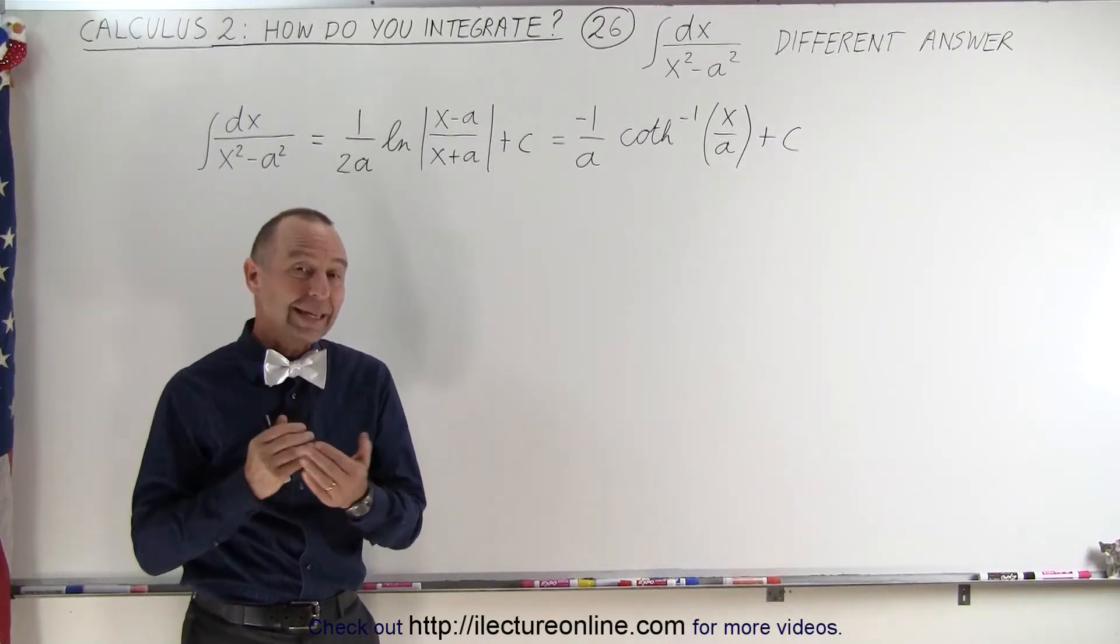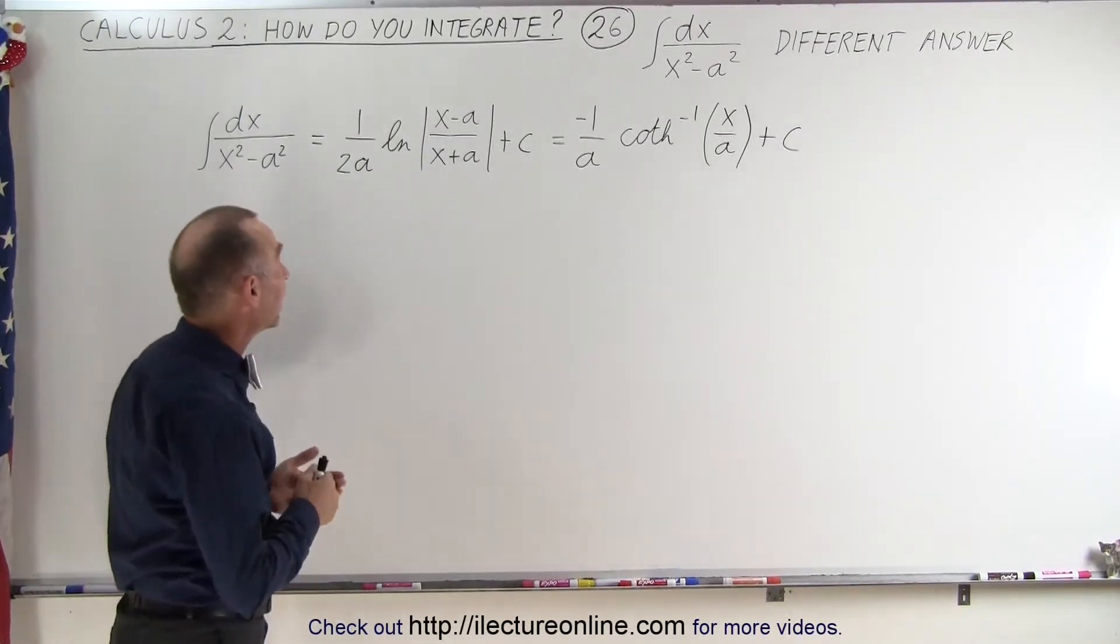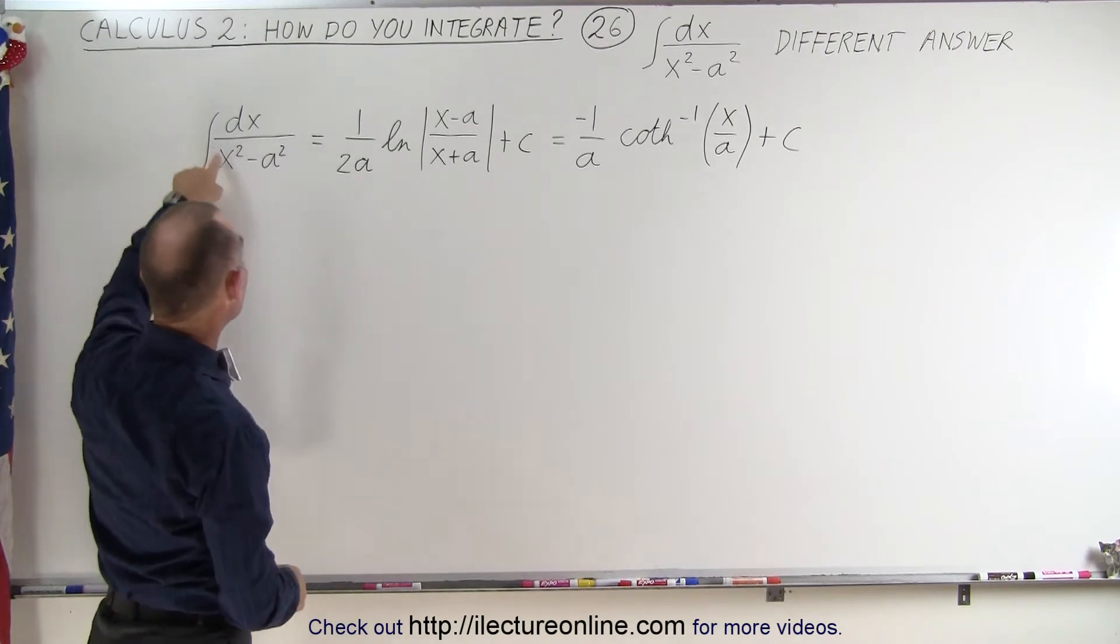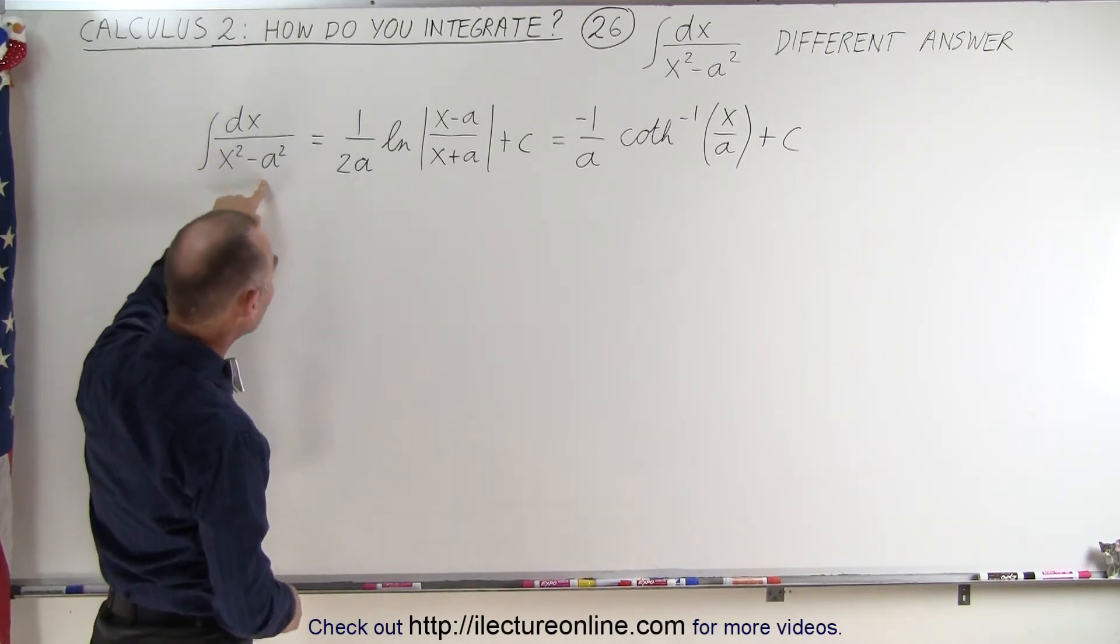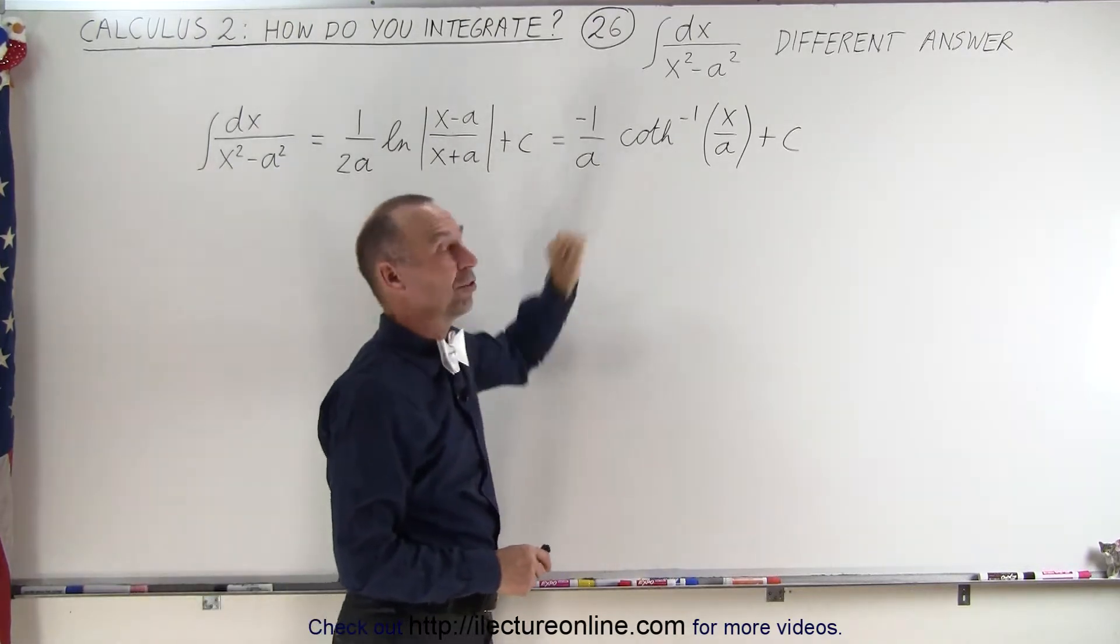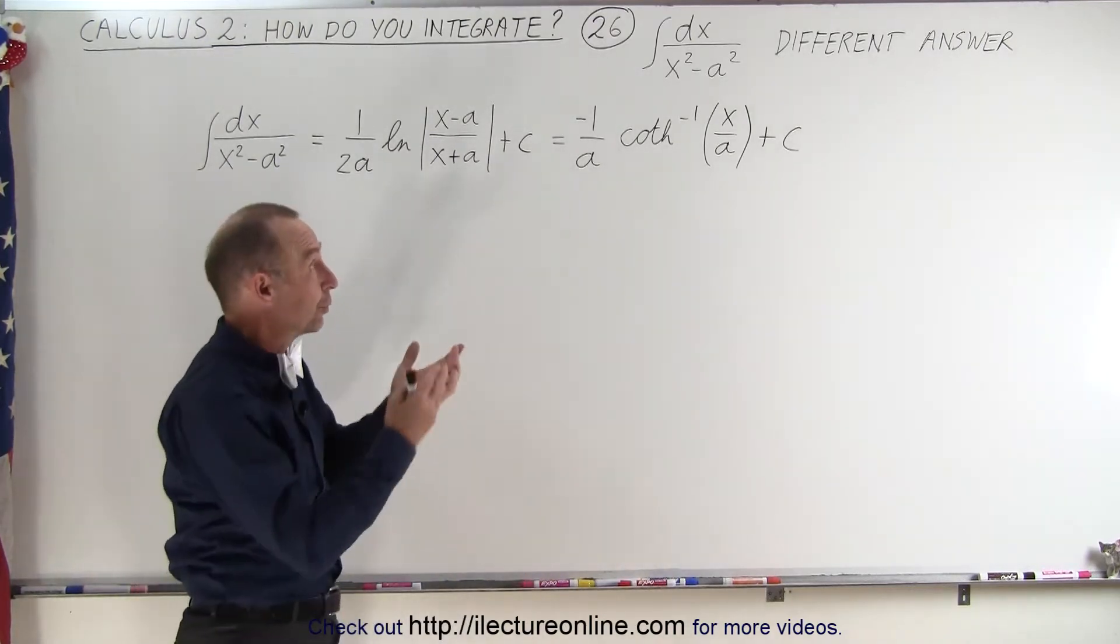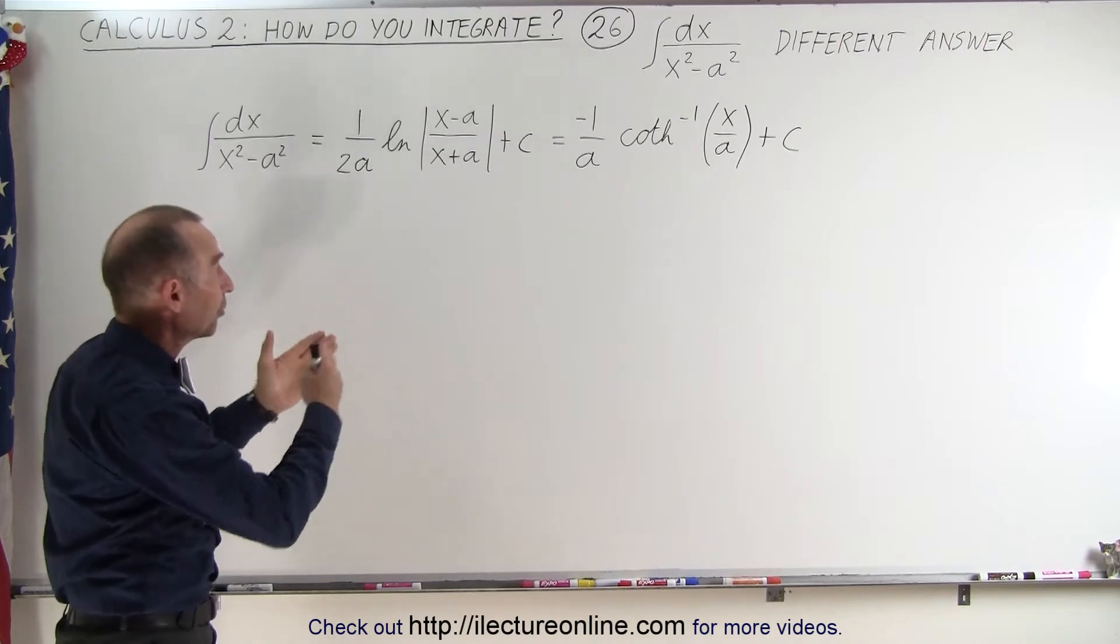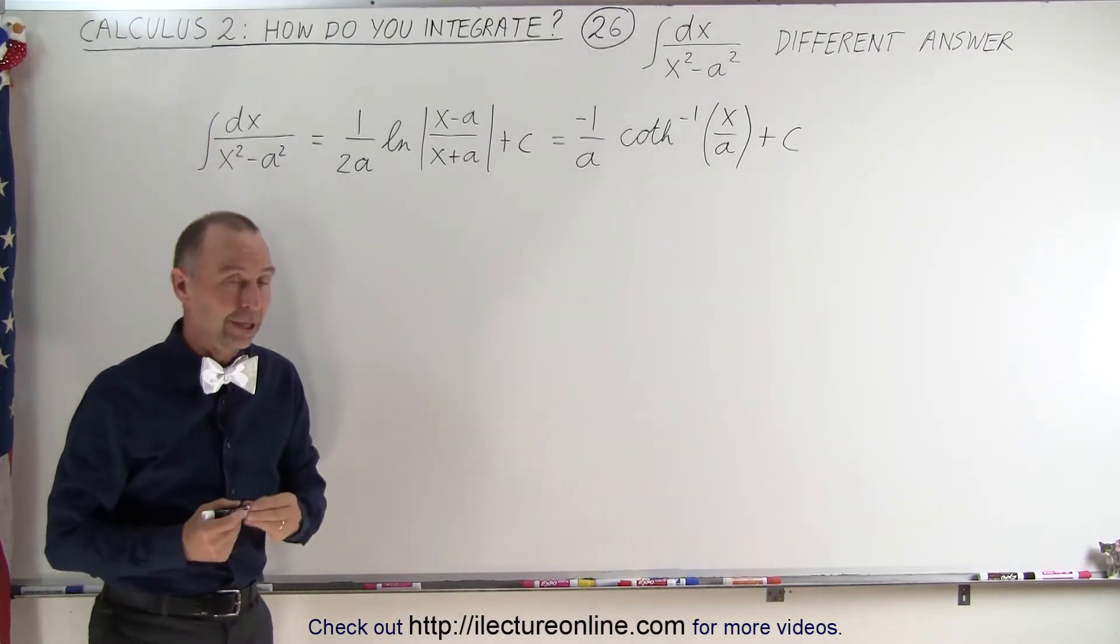Welcome to iLectureOnline. If you see this integral in an integral table, the integral of dx over x squared minus a squared, you might find this as being the answer, but you may also find this as being the answer. What we're going to do here is show that those two answers are indeed equal to one another.